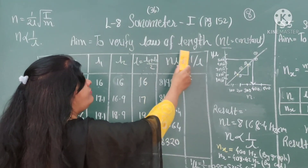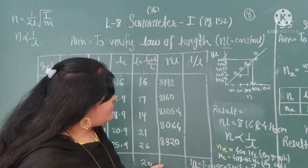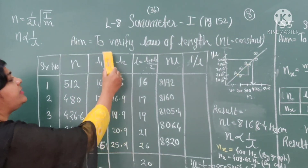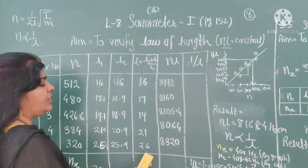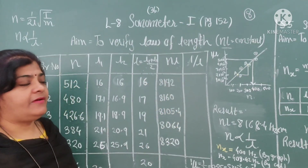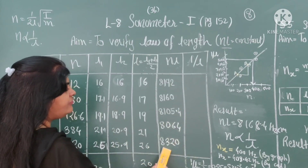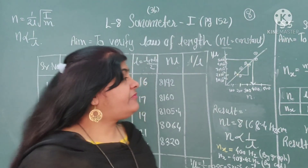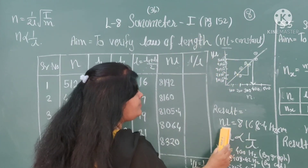This is to verify the law of length — we calculate either from the graph or by the calculation method. If the question does not mention a graph, then show the calculation with the mean value. If you observe, the first reading is near 8000, second reading 8000, third, fourth, and fifth — all these values are in the range of 8000. That is why we can say that NL is constant.